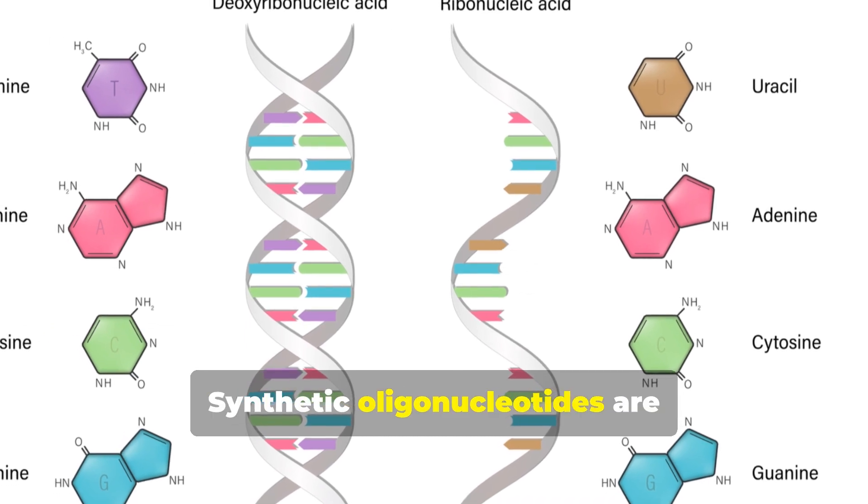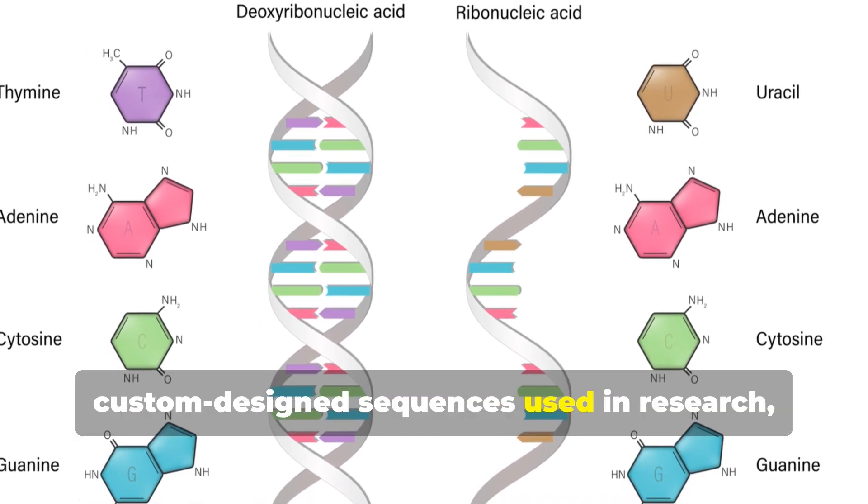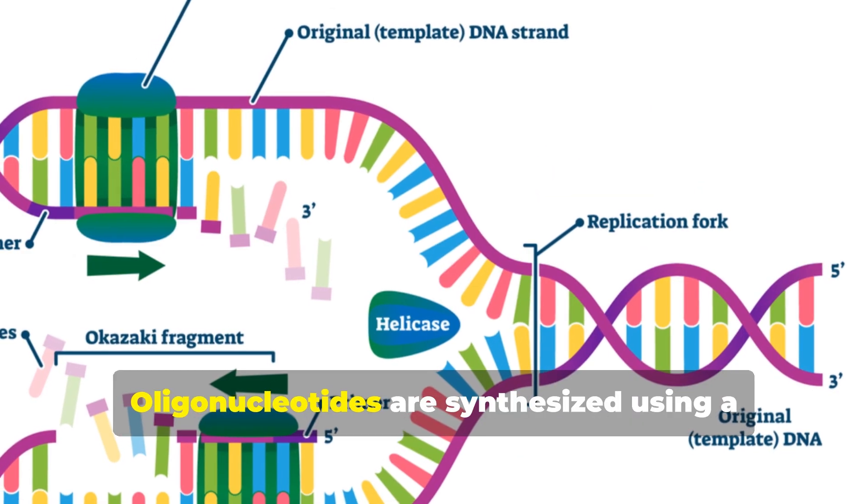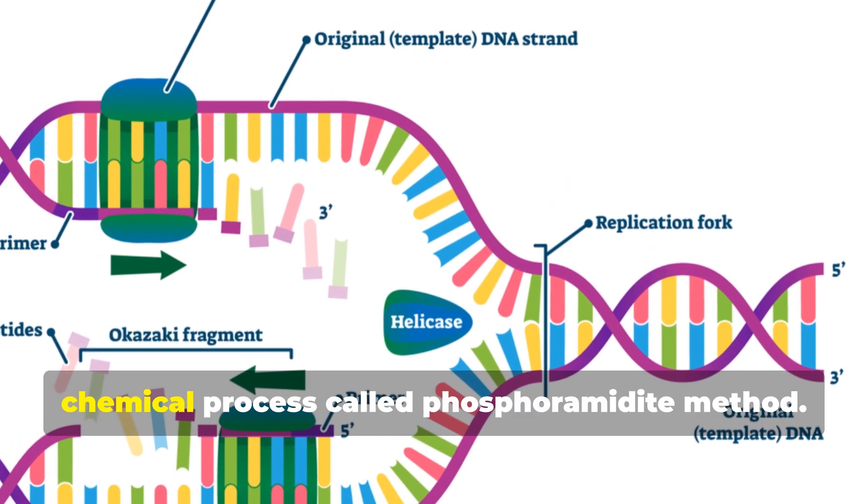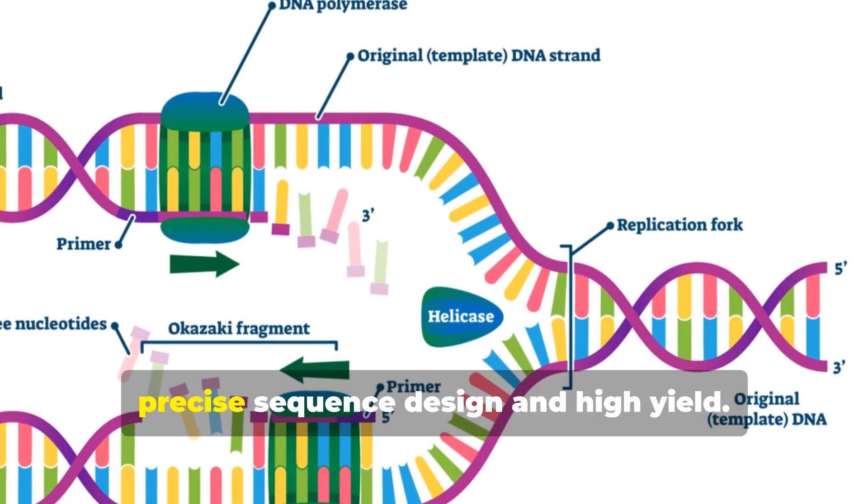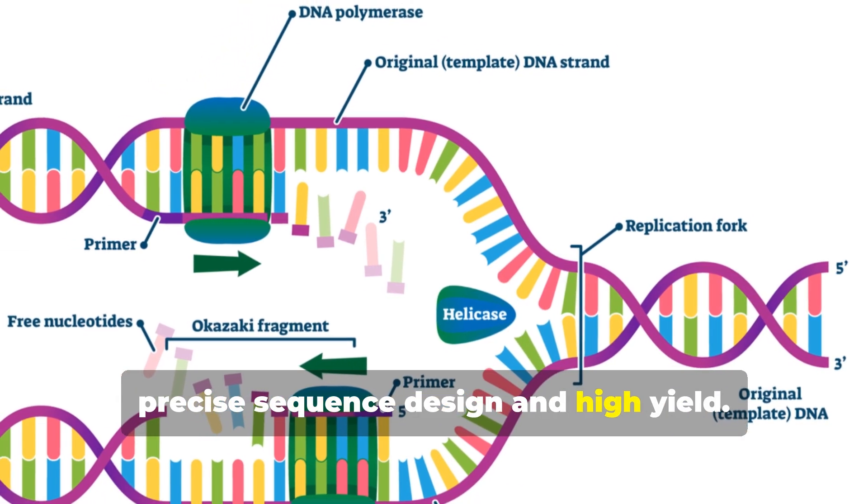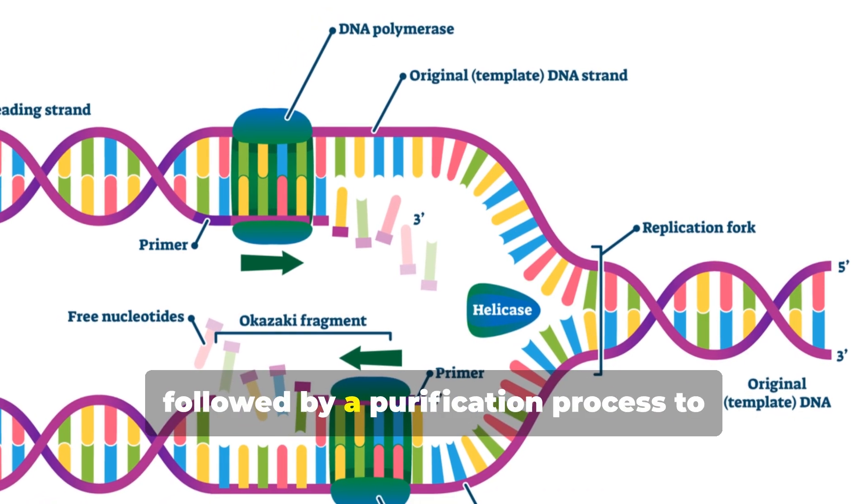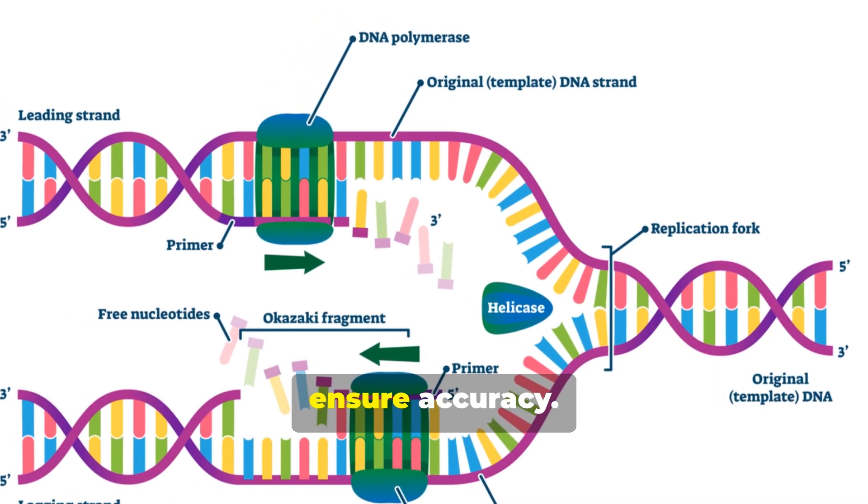Synthetic oligonucleotides are custom-designed sequences used in research, diagnostics and therapeutics. Oligonucleotides are synthesized using a chemical process called phosphoramidite method. This automated technique allows for precise sequence design and high yield. Each nucleotide is added step-by-step,